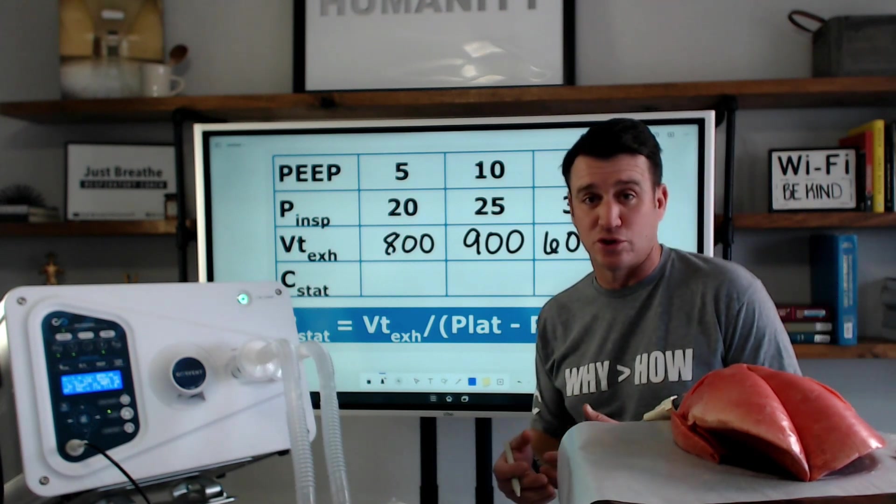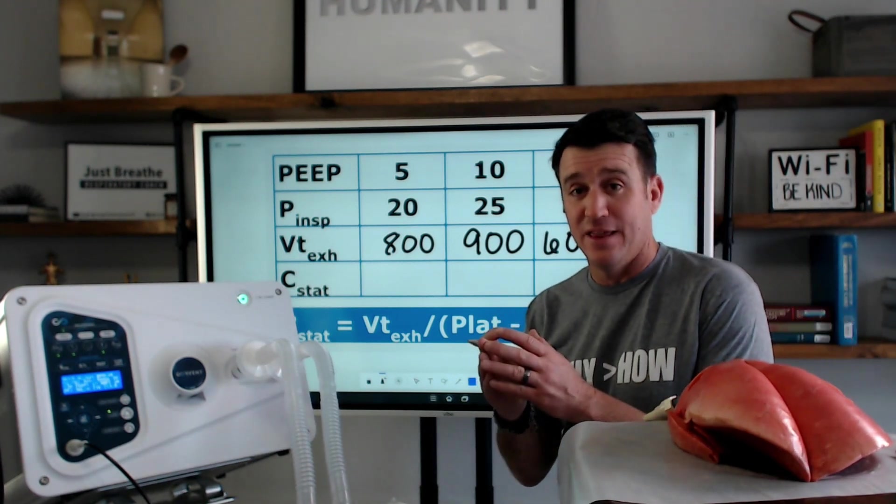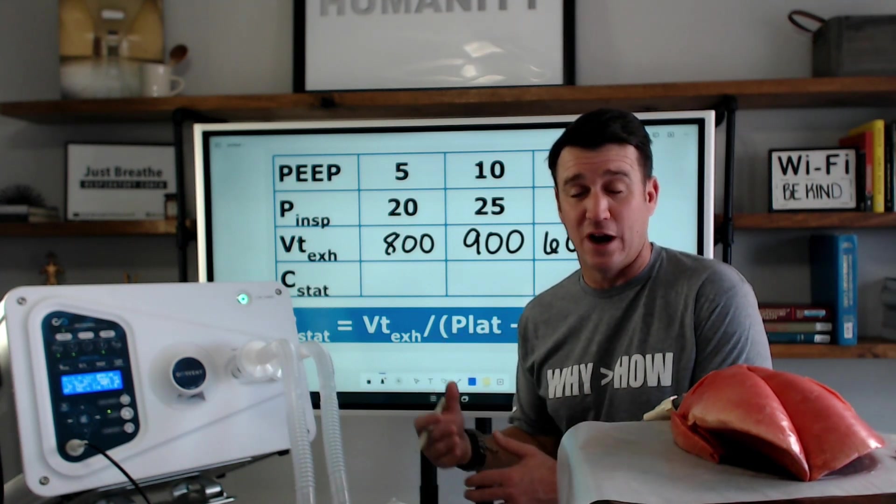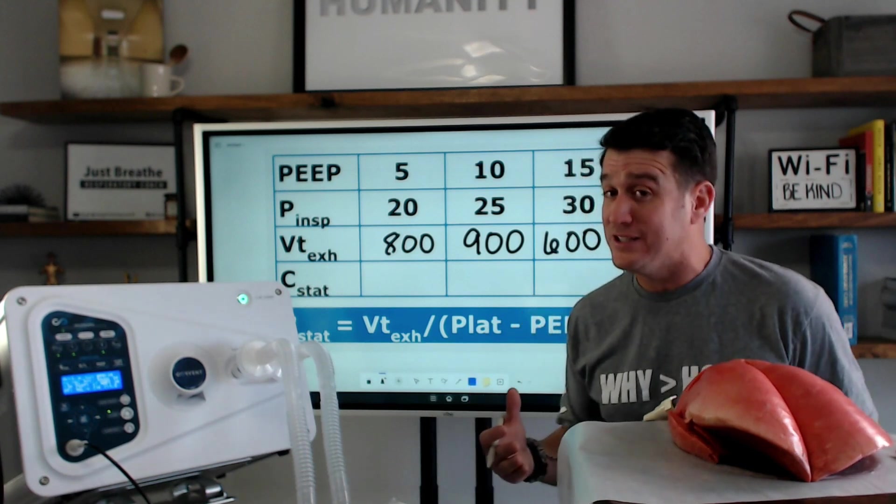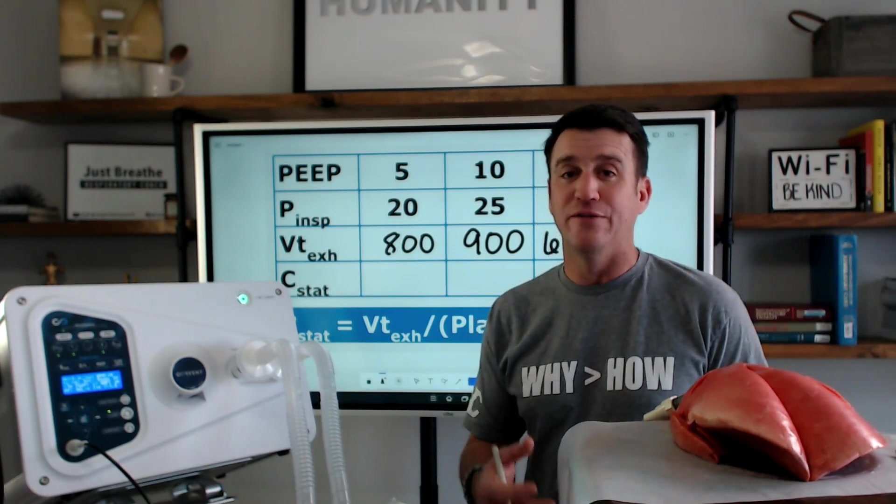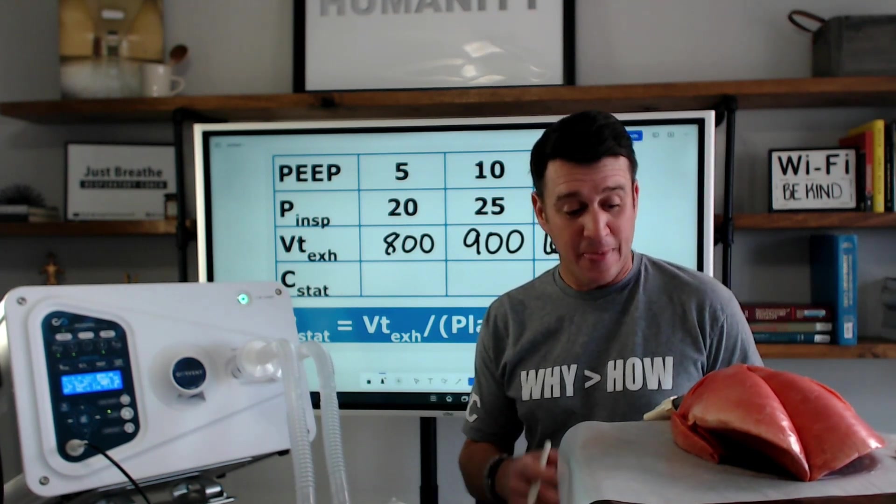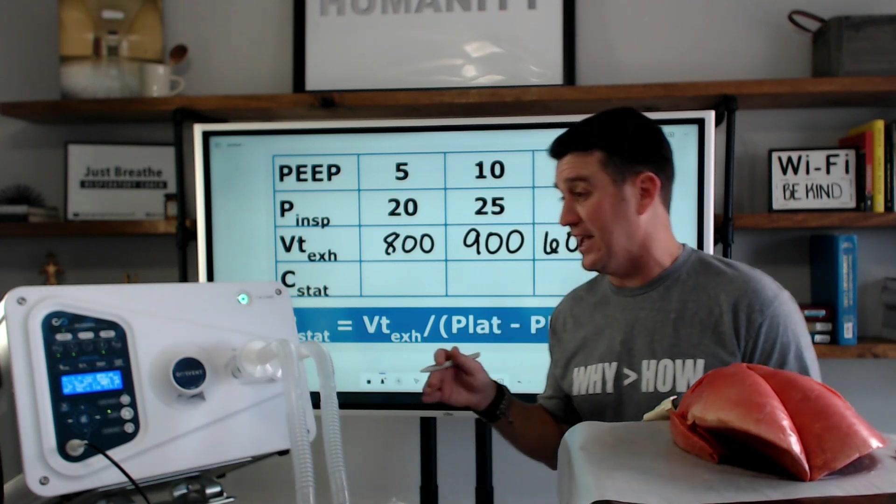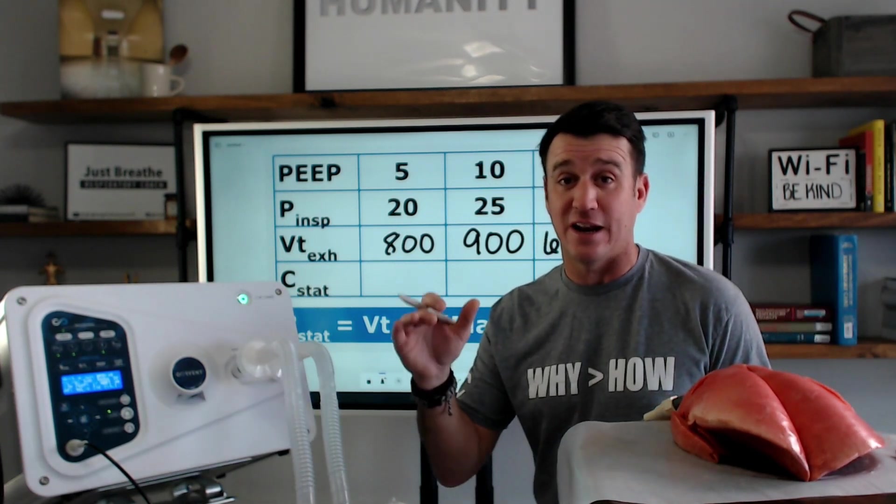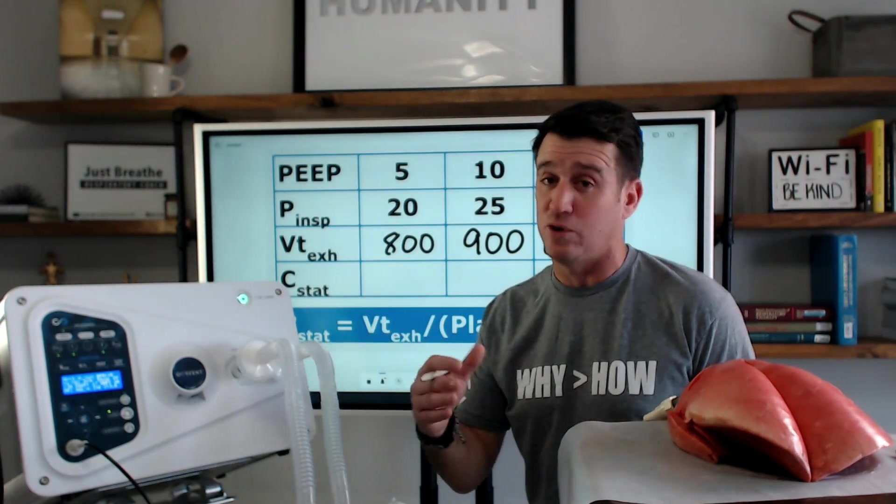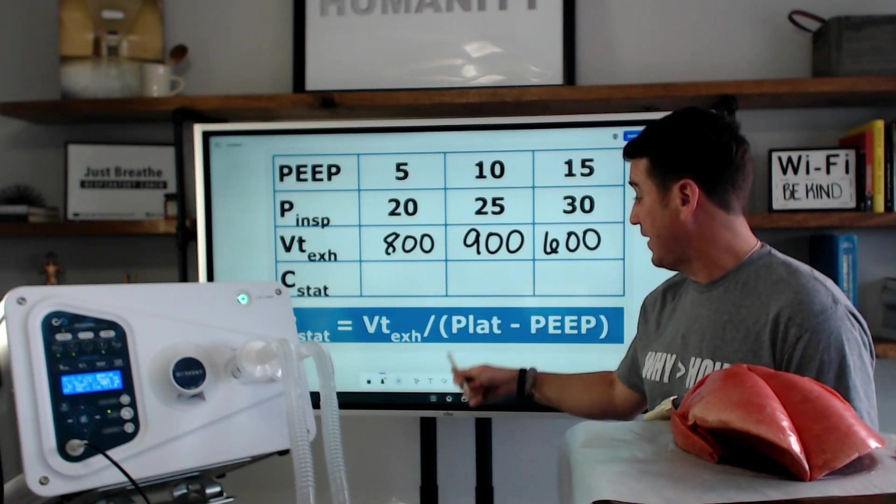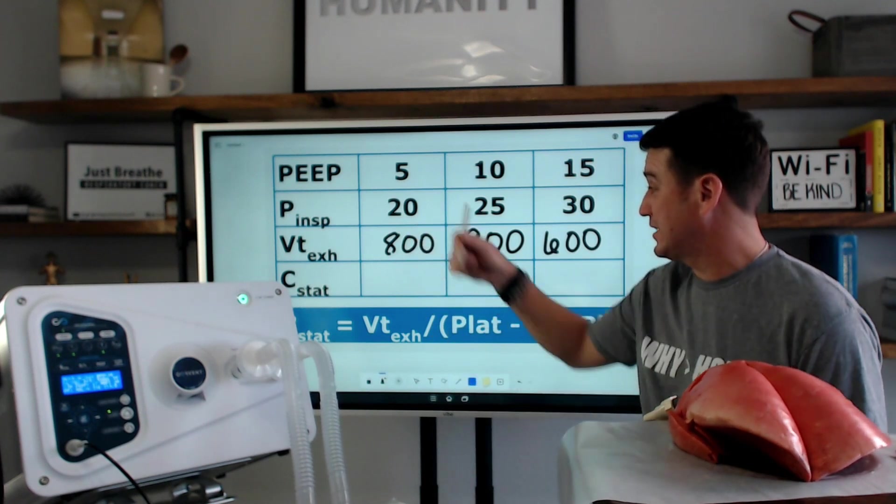The formula for static compliance is tidal volume divided by plateau minus PEEP. We're in pressure control, so we're going to assume that our peak inspiratory pressure is equivalent to our plateau pressure. This isn't always the case, especially in times of increased airway resistance. We have none of that going on right now. So, we're going to say that our inspiratory pressure set and our peak inspiratory pressure is equivalent to our plateau. So, we're going to use that number. We're going to start off by saying 800 divided by 20 minus 5.